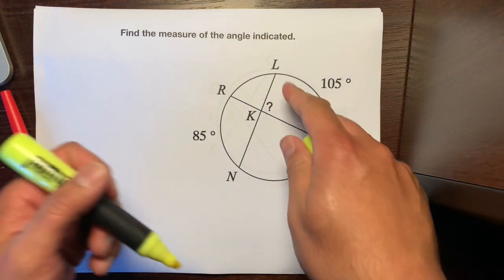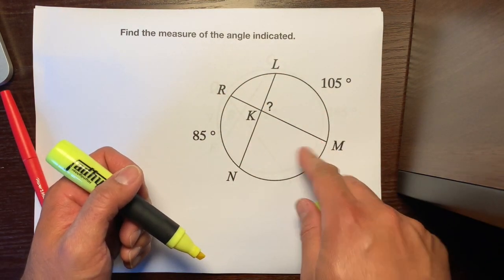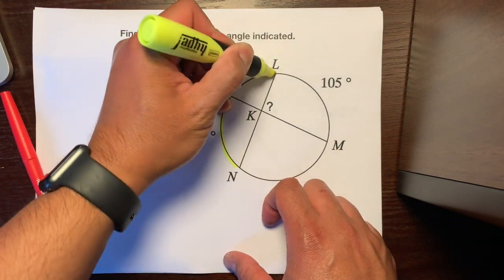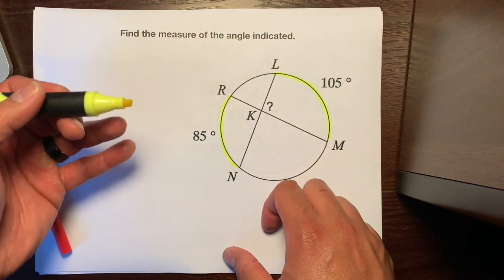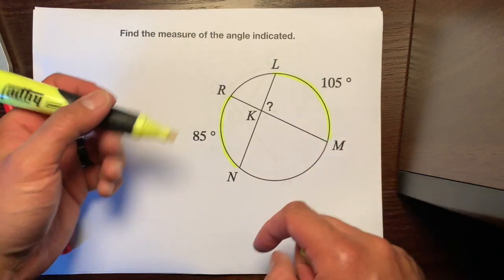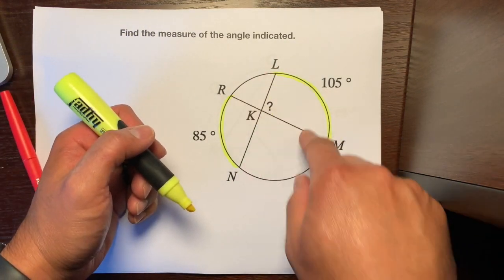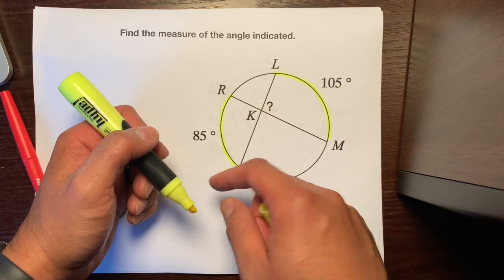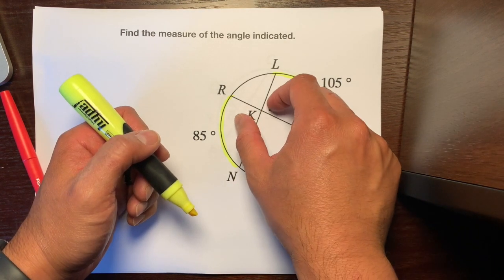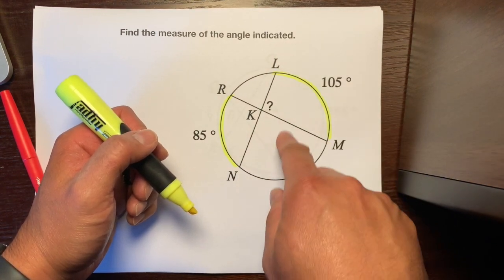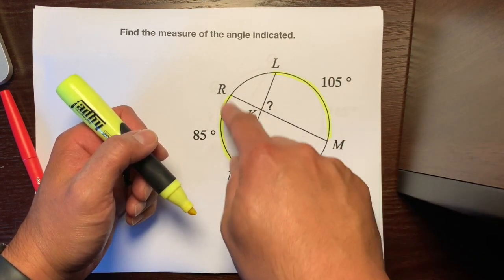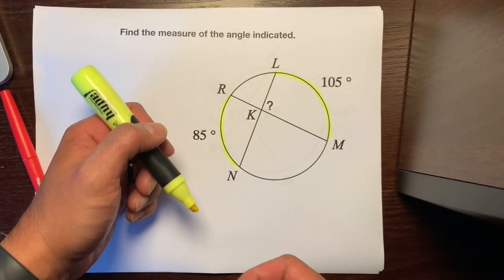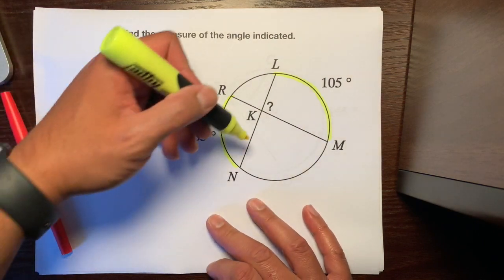So we have two chords that intersect. You would expect these two arcs here and here to be the exact same measure. However, they're not, because these two chords don't intersect in the center, so these angles here aren't central angles. If these two chords intersected in the center, then these two arcs would be the same. But they're just intersected somewhere in the circle that's not the center. It's okay — this isn't that complicated of a problem.